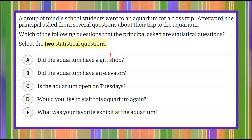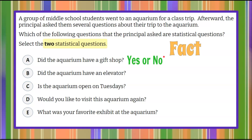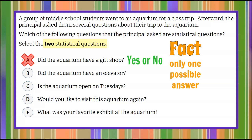Welcome back! We're discussing which of these five questions are statistical questions, remembering that a statistical question has more than one possible answer. Answer choice A: Did the aquarium have a gift shop? That's a yes or no question. Even though there are two possible outcomes, it is fact — there's only one correct answer. Every student should answer the same thing because they all went to the same aquarium. So we'll rule that out; it's a fact question, not a statistical question.